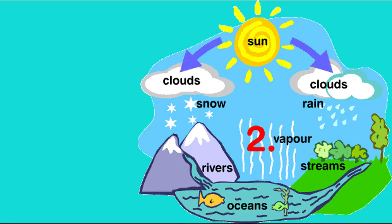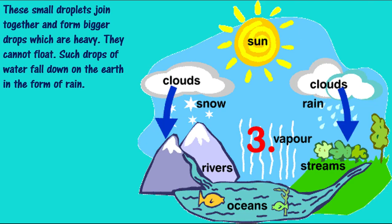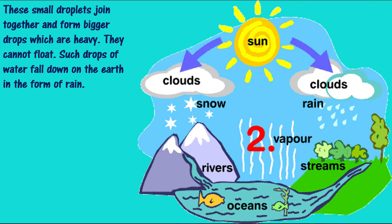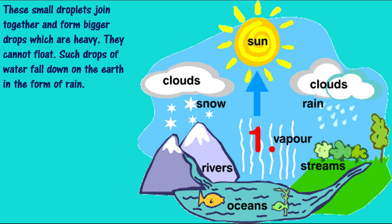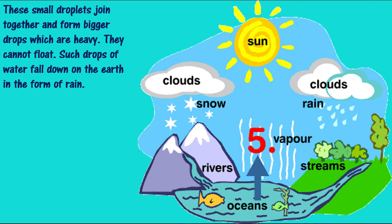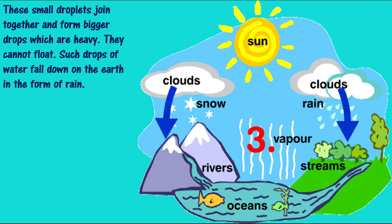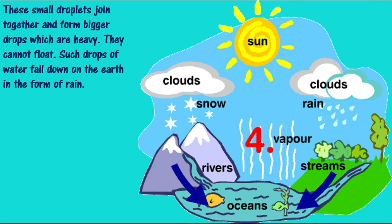These small droplets join together and form bigger drops which are heavy. They cannot float, and such drops of water fall down on the earth in the form of rain.